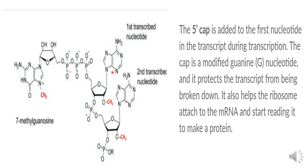In capping, the first nucleotide of the pre-mRNA is modified. A 7-methylguanosine triphosphate cap is added to the first nucleotide during transcription. The 7-methylguanosine has a triphosphate (3 phosphates). Two phosphates are removed from the 7-methylguanosine, leaving one phosphate. In the first nucleotide, which also has three phosphates, two phosphates are removed, and the 7-methylguanosine is joined at that position.